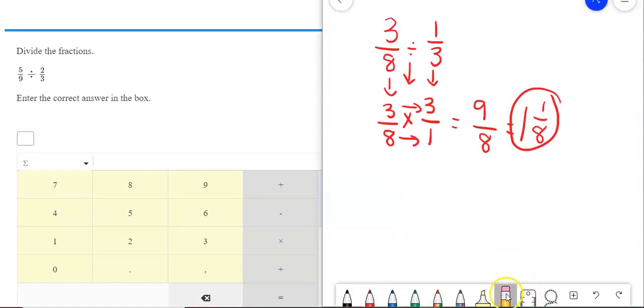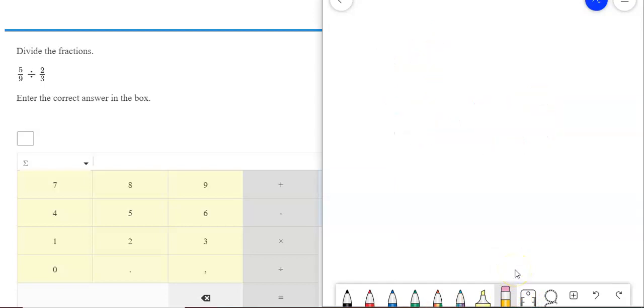Next, we have five-ninths divided by two-thirds. First thing we always are going to do when we're dividing, we're going to write it out. We're going to show work. So, I have five-ninths divided by two-thirds. First things first. Our first fraction comes straight down.